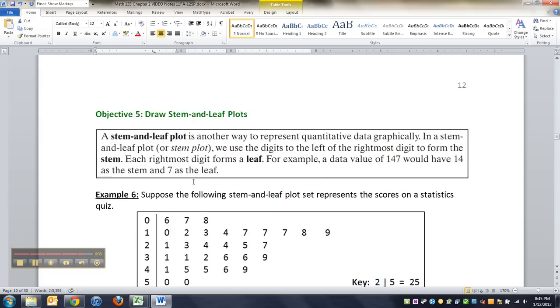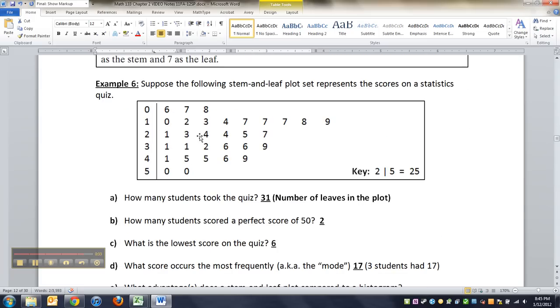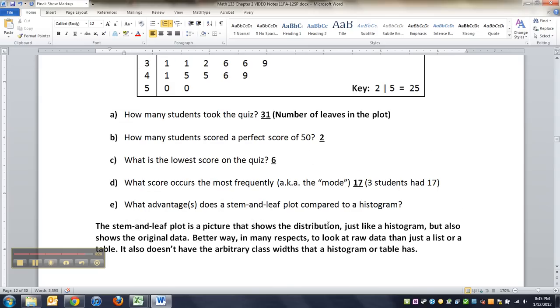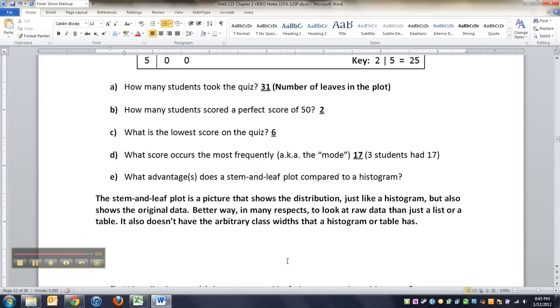But when you look down here in this stem-and-leaf plot, you can tell exactly how many people got what score. There's no, I just made up a class width and went with it. None of that. It all comes out better.